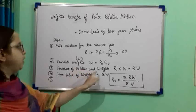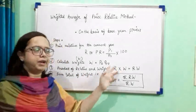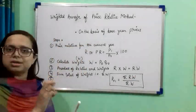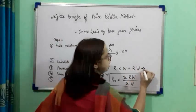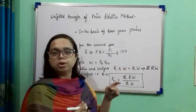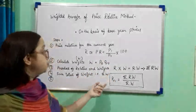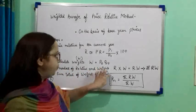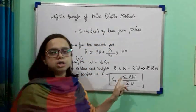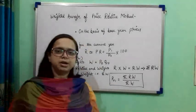Next, find the product of relative and weight: R × W. Once R is obtained from the price relative and W from the weight calculation, multiply them. Then calculate summation RW by summing all R×W values across all commodities. Similarly, calculate summation W. Finally, apply the formula P01 = ΣRW / ΣW to get the weighted average of the price relative index number.